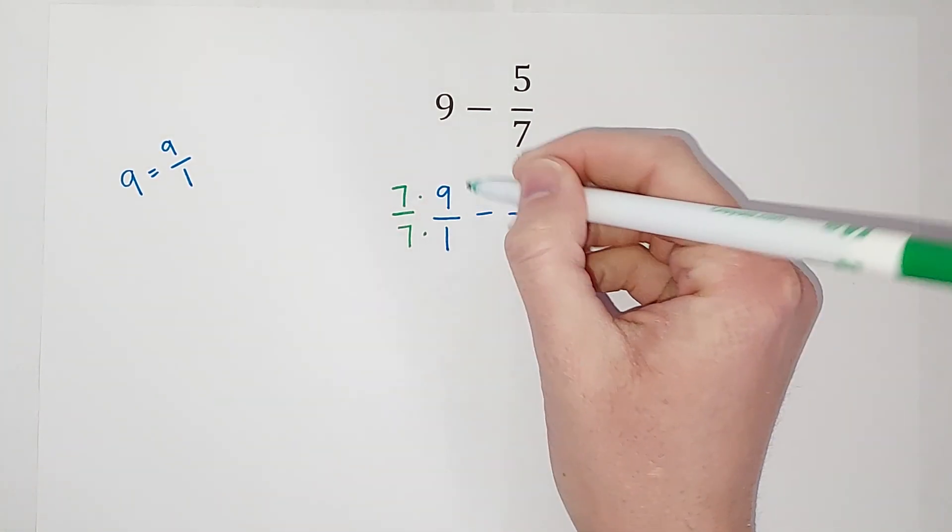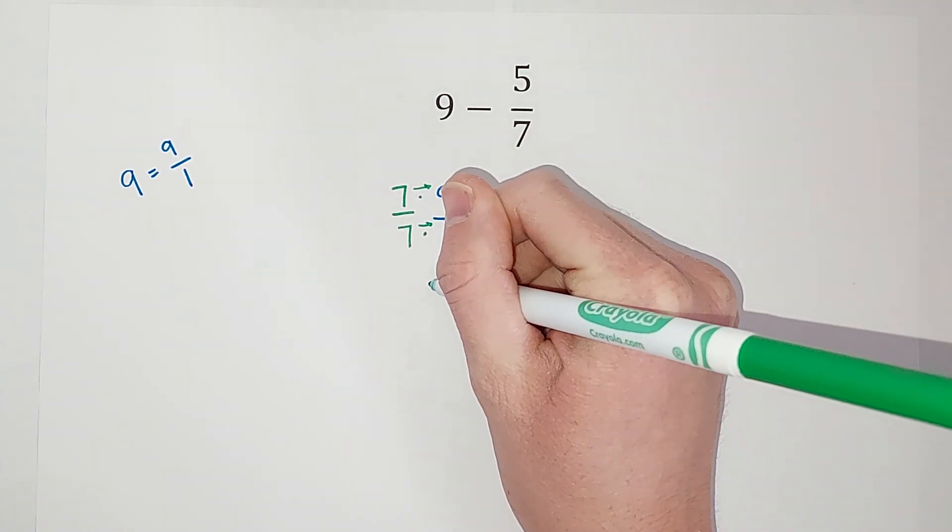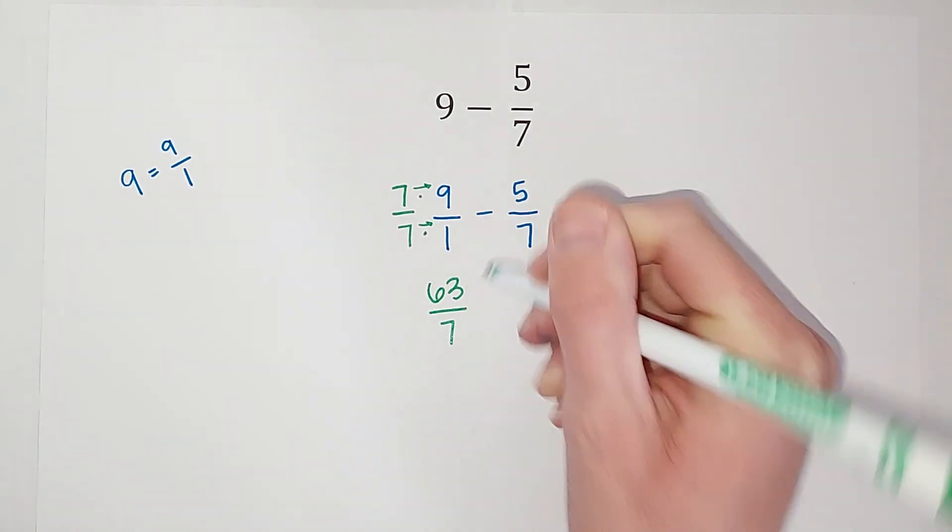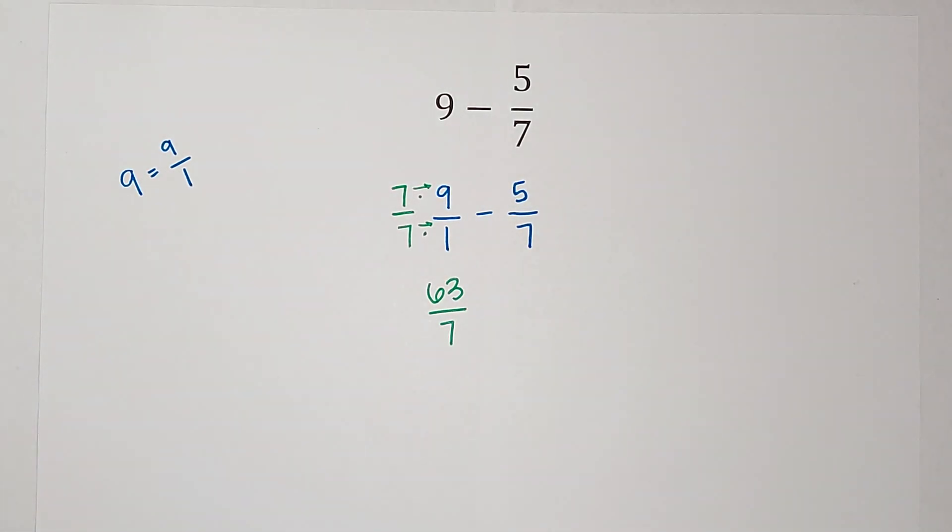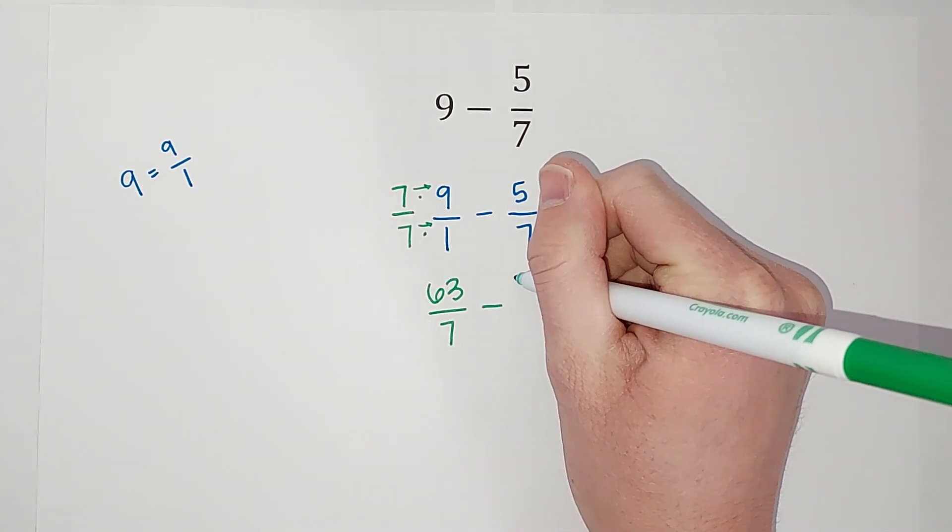So when I multiply fractions, I multiply straight across. 7 times 9 gives me 63. 7 times 1 gives me 7. That is what I wanted to be my denominator. So 63 over 7 minus 5 over 7.